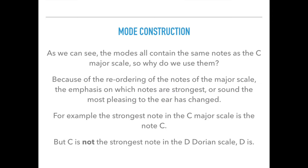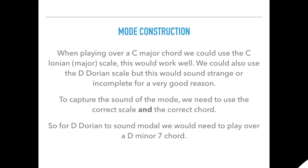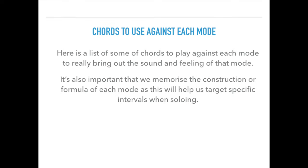As we can see, all these modes contain the same notes as the C major scale. So why do we use them? Because of the reordering of the notes of the major scale, the emphasis on which notes are strongest or sound most pleasing to the ear has changed. For example, the strongest note in the C major scale is C, but C is not the strongest note in the D Dorian scale — D is. To capture the sound of a mode we need to use the correct scale and the correct chord, so for D Dorian to sound modal we would need to play that scale over a D minor 7 chord.